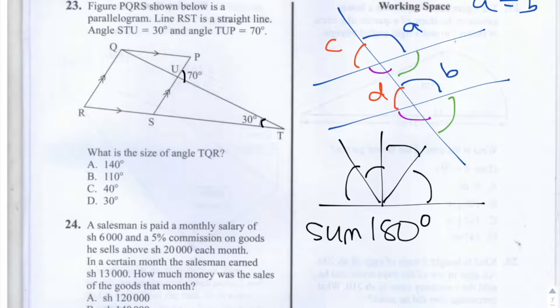The first thing I would do here is work out the size of angle SUT, so SUT, and that's on a straight line with TUP, so it's equal to 180 minus 70, so it's equal to 110 degrees.